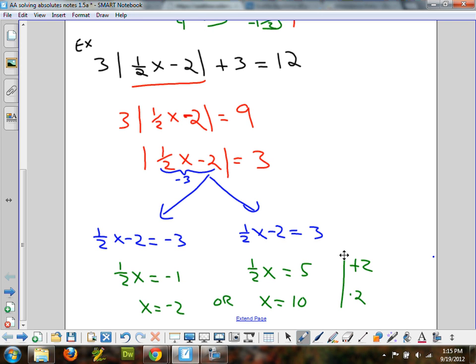If I put a 10 up there, will it come out to 12? Half of 10 is 5. Minus 2 is 3. Times 3 is 9, plus 3 is 12. Checks. Same thing with the negative 2. If you put a negative 2 in there, that'll be negative 1, minus 2 is negative 3. Absolute value of negative 3 makes positive 3, so you still get a 9 plus 3 is 12. It checks as well. Hopefully, that has helped.